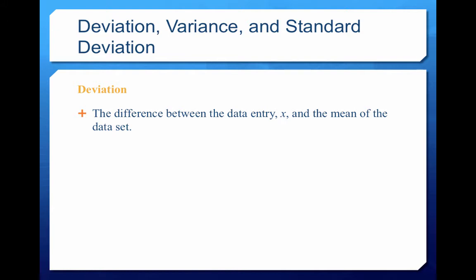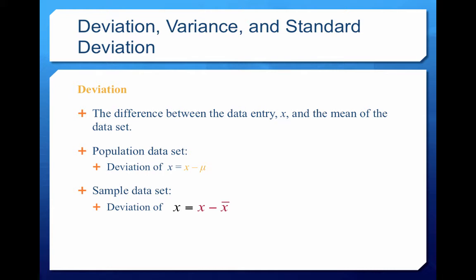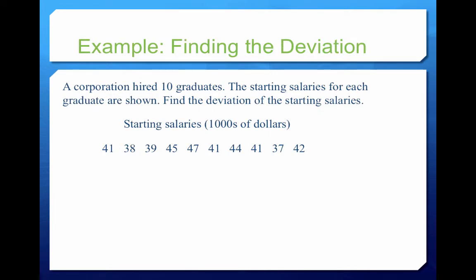The next concept is deviation — the difference between a data entry X and the mean of the data set. For a population, the mean is mu, so deviation = X minus mu. For a sample, the mean is X-bar, so deviation = X minus X-bar.